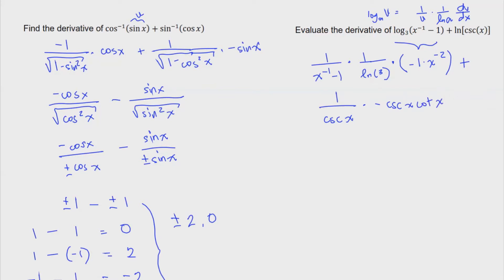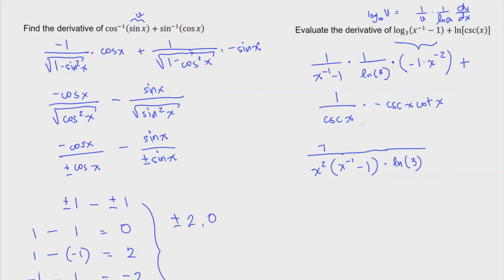Now let us simplify. What we have is negative x to the negative two — that becomes negative one over x squared — times x to the negative one minus one, all multiplied by ln of three. And then we subtract cosecant x cotangent x. Simplifying this expression, the cosecant cancels out and we're left with negative cotangent of x.